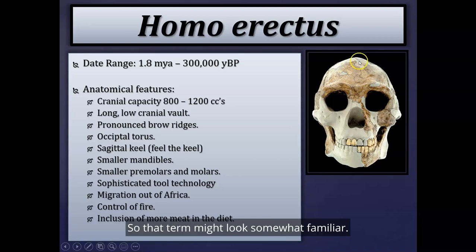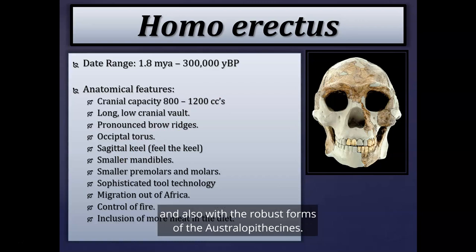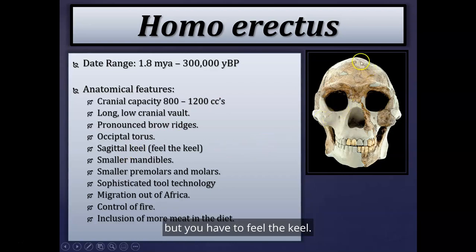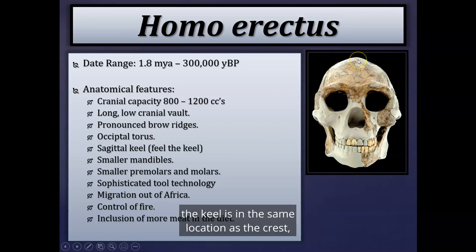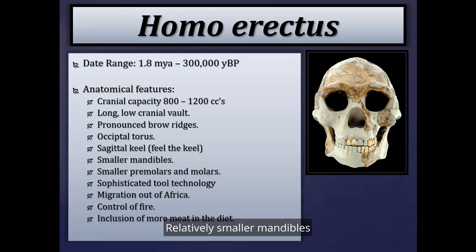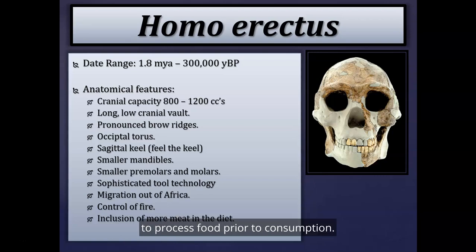Homo erectus also displays a sagittal keel — in the same location as the sagittal crest seen in gorillas, orangutans, and robust australopithecines, but less obvious; you have to feel it rather than see it. We also see relatively smaller mandibles and smaller posterior dentition — smaller premolars and molars — again due to a more generalized diet and the use of fire and stone tools to process food prior to consumption.